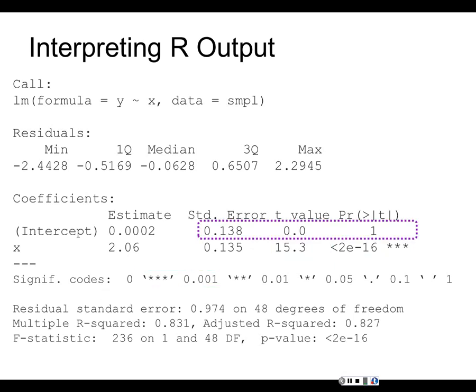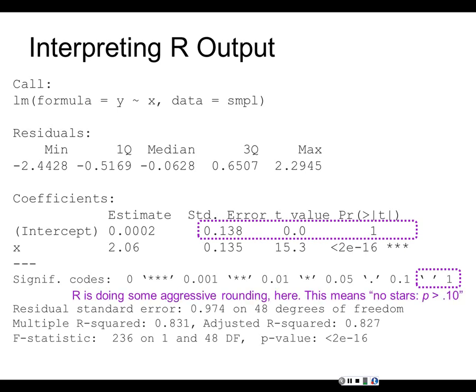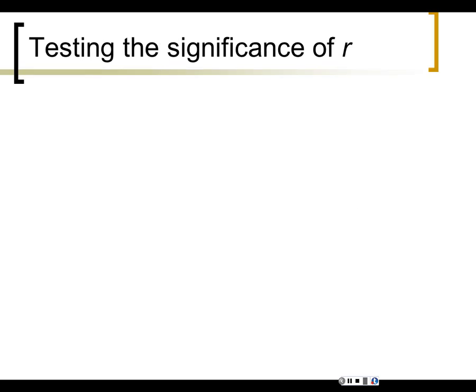There's also a test for a — the y-intercept — but we don't really care. In this case the line went pretty close to zero so it wasn't statistically significantly different from zero, but we usually don't care about the y-intercept. The R output legend tells you what the asterisks mean: three asterisks means less than 0.001, and a blank means greater than 0.1.